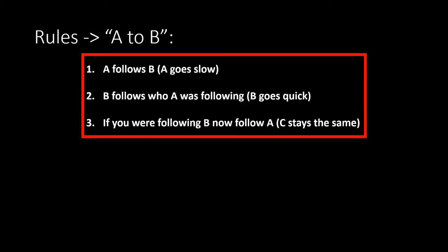If there's anything to take home from this tutorial, it's these three rules. For an up change A to B: rule one — A follows B and goes slow for one below to achieve that. Rule two — bell B follows the bell who A was following, going quickly to achieve that. Rule three — if you were following B, you now follow A; you are C and you stay the same speed.